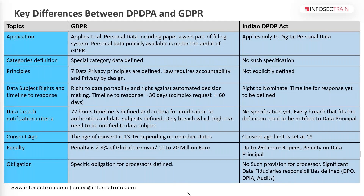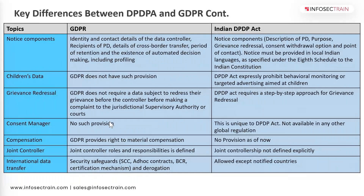Processor obligation is not called out, as I have already mentioned. The notice component we are going to discuss in detail — what are the explicit elements to be covered as part of the notice. GDPR gives explicit requirements and the Indian DPDP Act follows almost the same, but one additional requirement is providing notice in the regional language. GDPR does not explicitly speak about targeted children's content, although this has been called out in subsequent guidelines. Grievance redressal requires a step-by-step approach in the DPDP Act, but in GDPR you can directly approach a court or a DPA before exhausting remedies with your data controller.